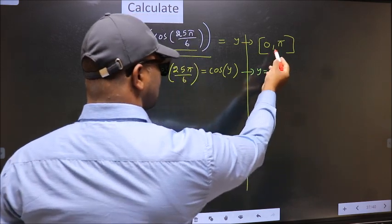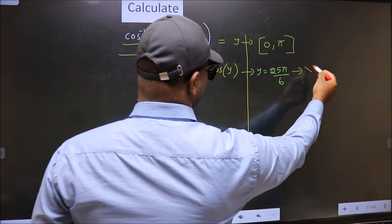Now comparing both sides we get y to be 25 pi by 6. Does this lie in this interval? No. So reject this answer.